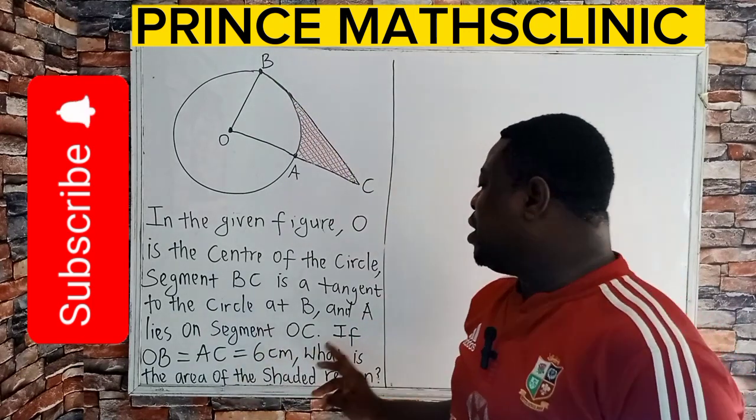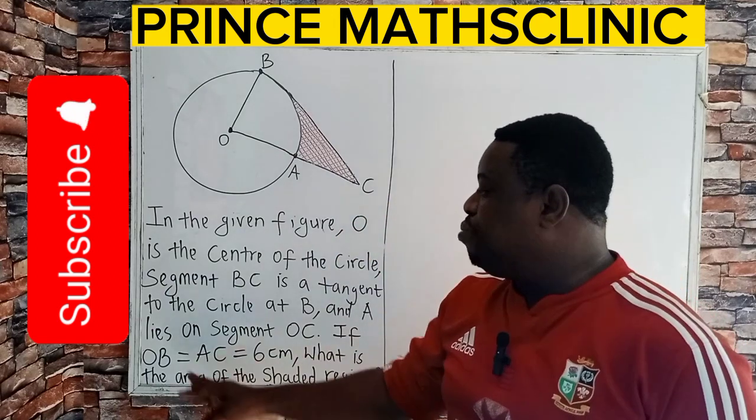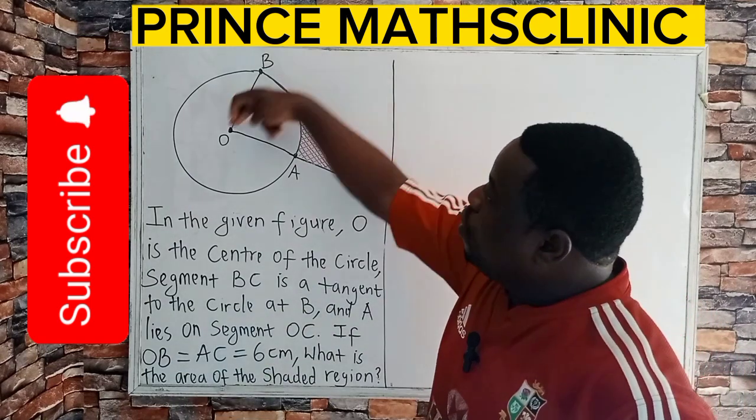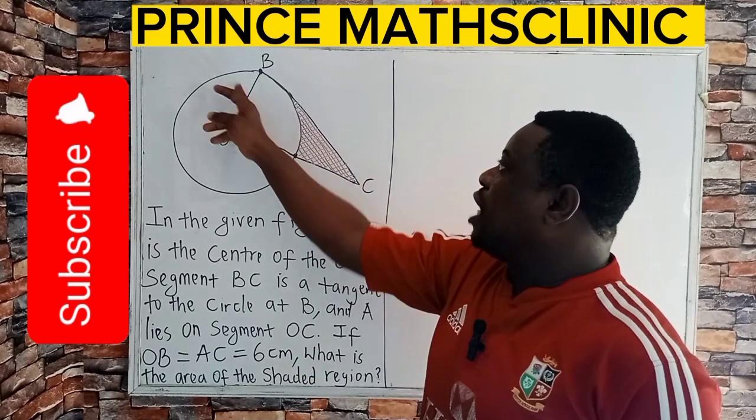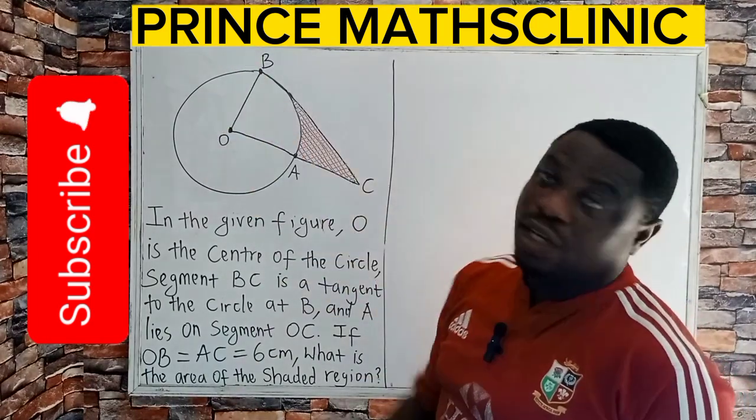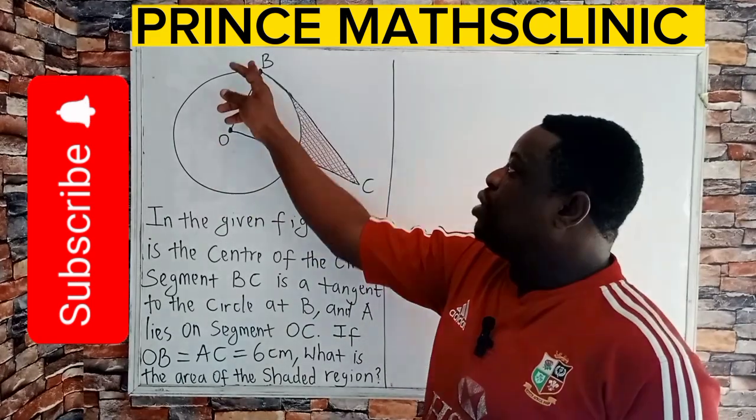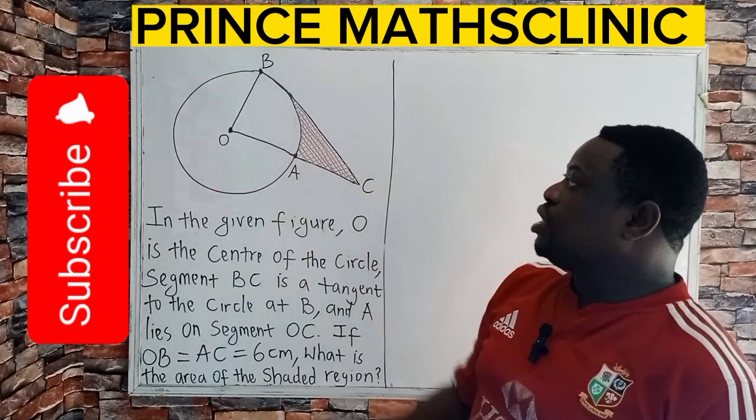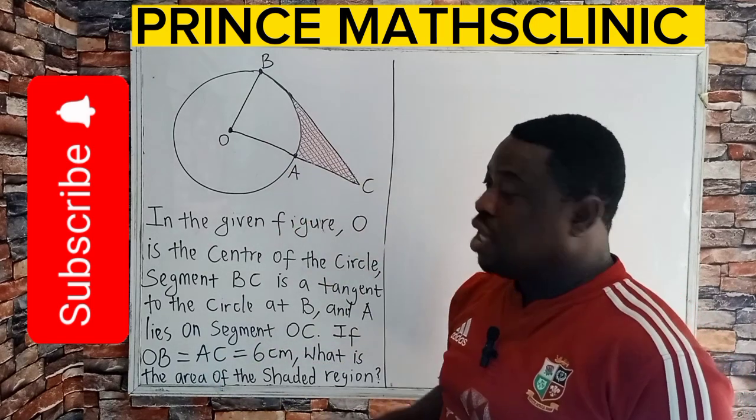And A lies on the segment OC. If OB is equal to AC, equal to 6 cm, that is, OB is equal to AC and both of them are 6 cm. But interestingly, looking at the question, you find that OB is a radius. OA is also a radius. So that means that OB and OA are equal. So if this is 6 cm, this is also 6 cm. And the question already told us that AC is also 6 cm.